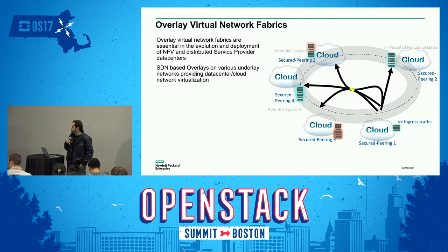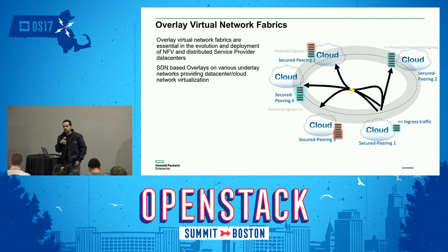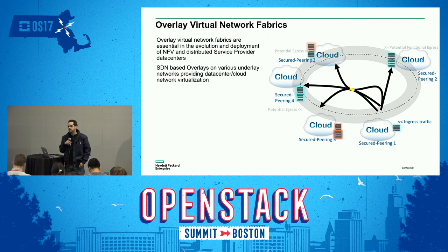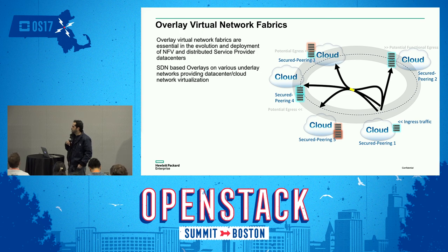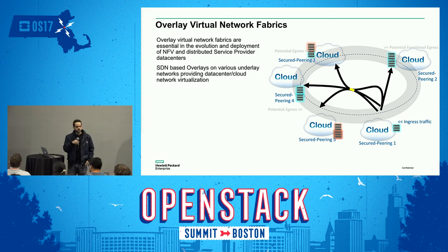In most cases, these POPs are OpenStack instances — a data center instantiation of OpenStack where we have compute power and VNF solutions that we can instantiate to solve the specific use case we're trying to tackle. But what we normally have is an overlay network running on top of an underlay network that, in most cases, we have no visibility into.